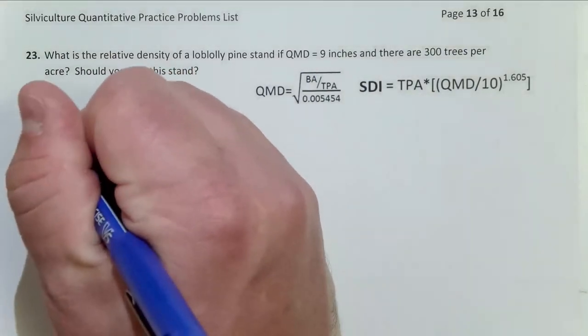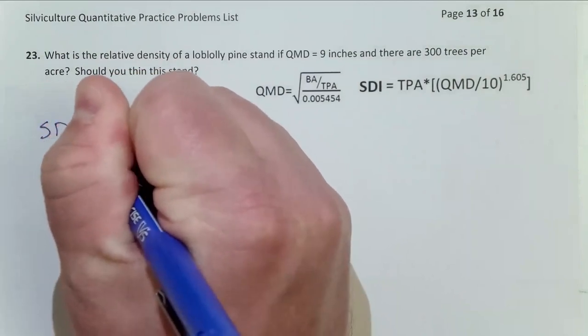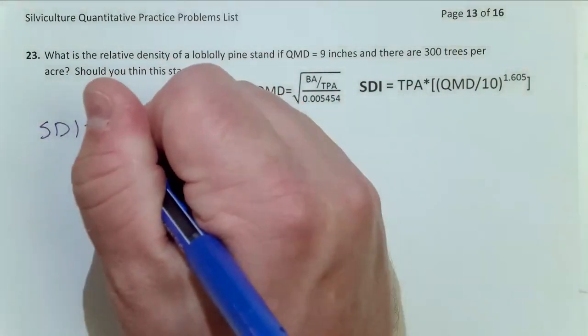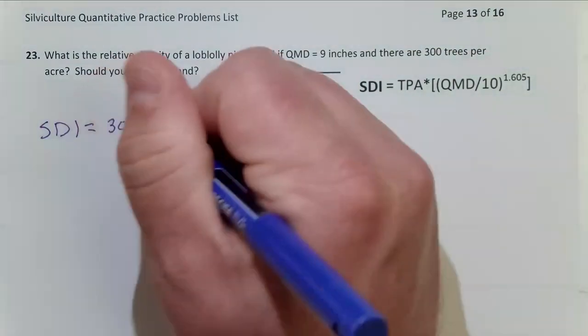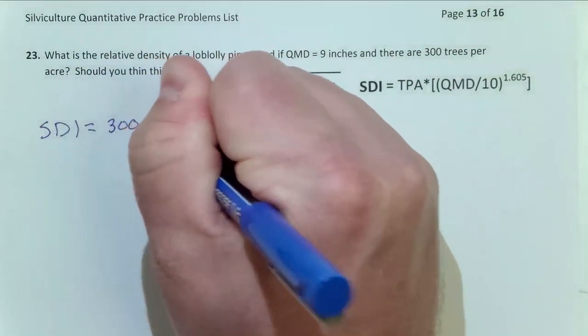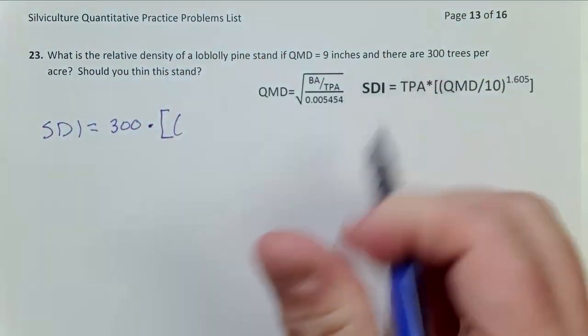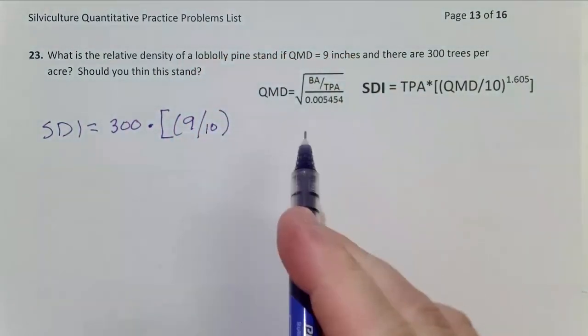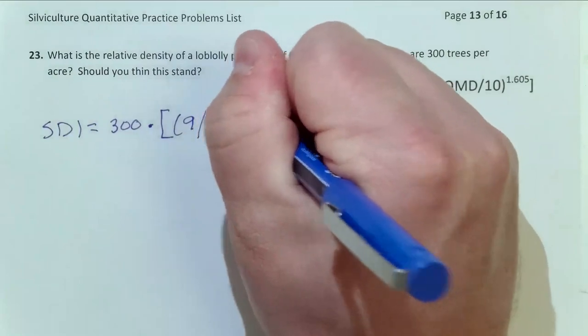So SDI, and remember SDI, or stand density index, is the number of 10-inch trees you could fit on an acre of land. And so trees per acre is 300, times QMD is 9, and then we raise that to the 1.605 power.